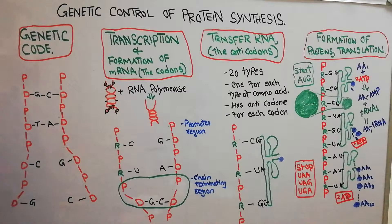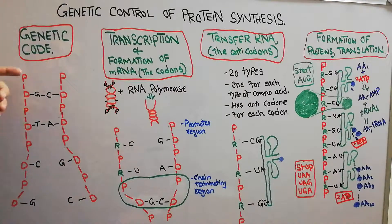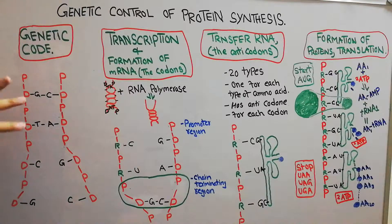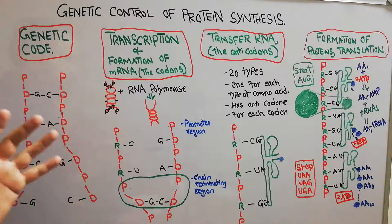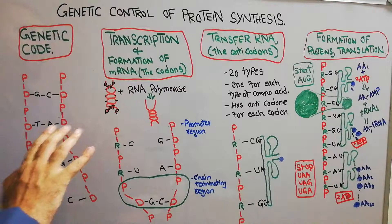Today we are going to discuss how this structure of DNA helps in the formation of proteins. The genetic code is a sequence of nitrogenous bases present in the DNA. For example, a small segment of DNA made of guanine, thymine, and cytosine — this triplet — determines a genetic code that helps in the transfer of hereditary information to children and also in the formation of proteins.